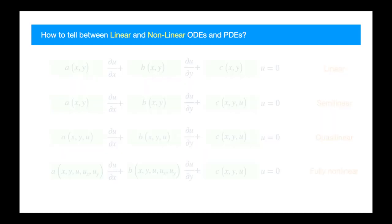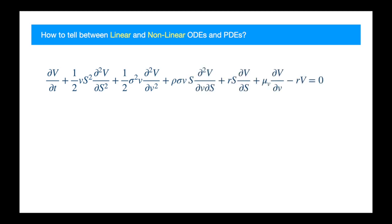Exercise time? We saw Black-Scholes PDE is linear. How about the Heston Stochastic Volatility Model PDE? Now, how about the Local Stochastic Volatility Model?